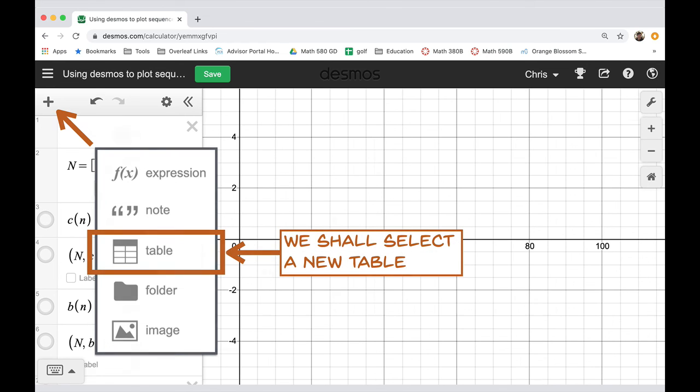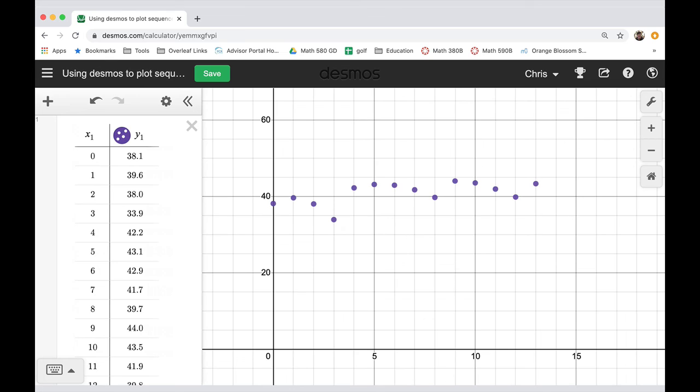And filling in a table is rather self-evident. You just plug in your data and boom, there you go—there's your soybean crop data. So have fun exploring sequences in Desmos!